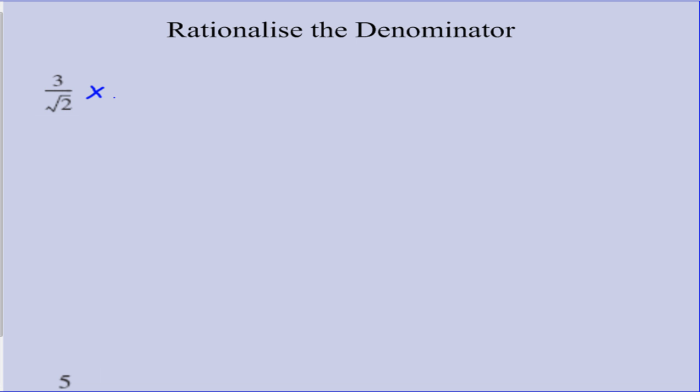How are we going to do that? We can multiply it by another number. What number could we multiply by a surd so that we end up with a whole number answer? The easiest, fastest, most efficient way of doing that is to multiply a surd by itself. That way, you are always going to get a nice whole number answer — you are always going to get the number you started with. In our case, we are going to get 2.